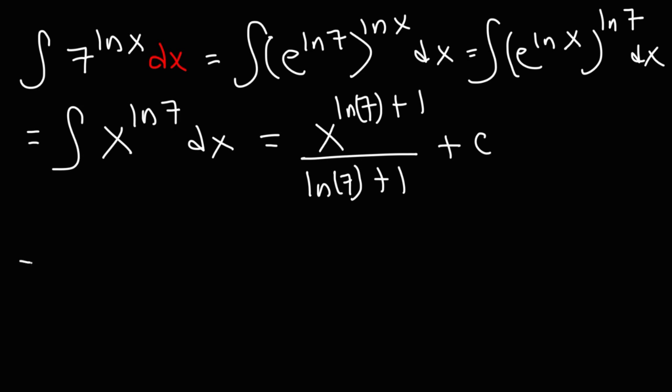So we could say that this is equal to x raised to the natural log of 7 times x to the first power, which is simply x, divided by, I'm going to reverse these two, 1 plus ln 7.